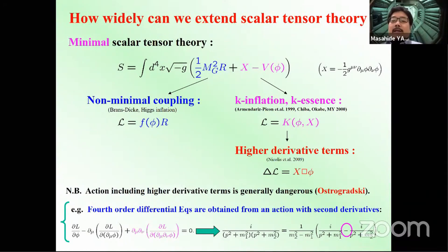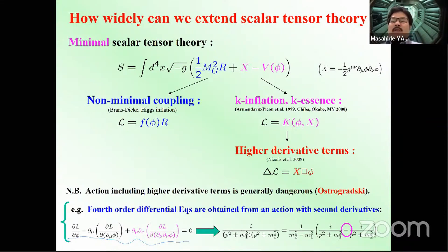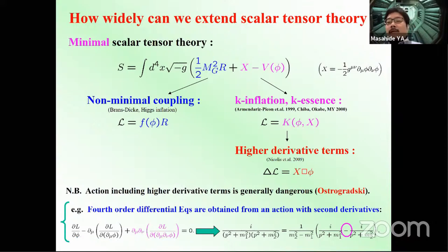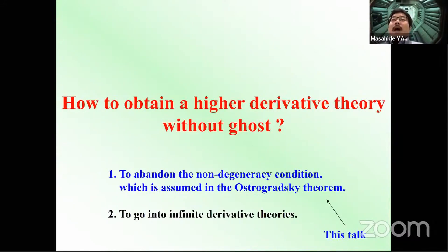Generally speaking, if an action includes a higher-derivative term, it leads to ghostly degrees of freedom — this is dangerous, as shown by Ostrogradsky more than 150 years ago. For example, if the action includes second derivatives and we go into field theory, the equation of motion becomes a fourth-order differential equation. Estimating the propagator, it can be decomposed into two poles, one of which has the wrong sign for the kinetic term — a ghostly degree of freedom. So higher-derivative terms are generally dangerous.